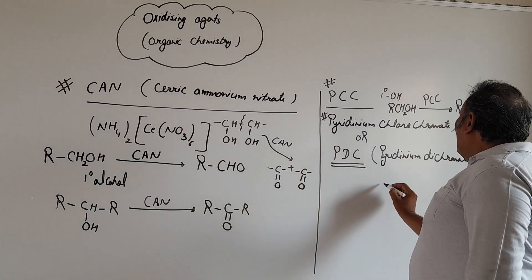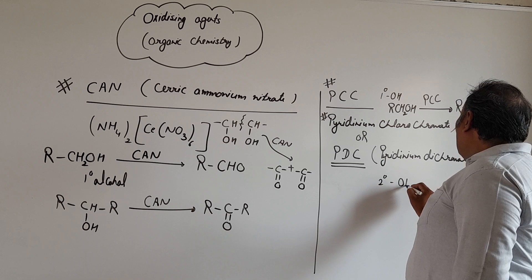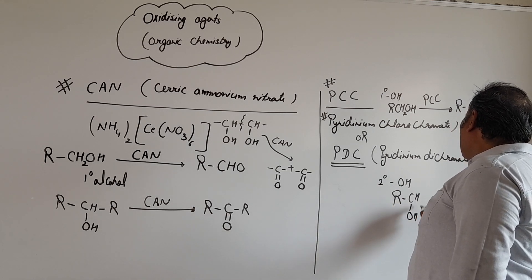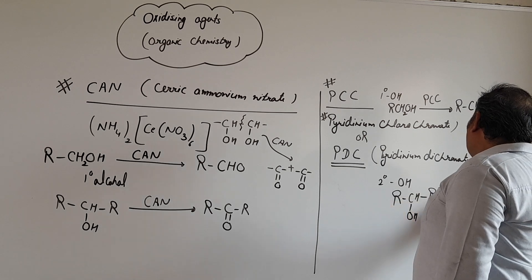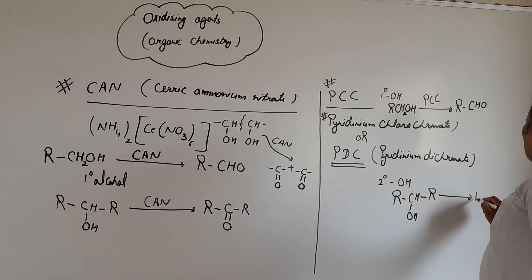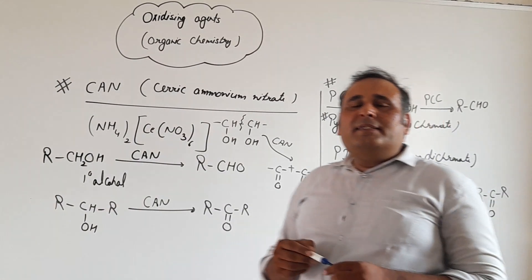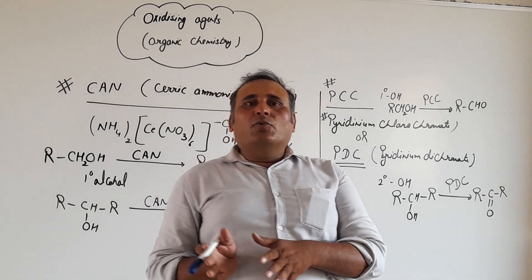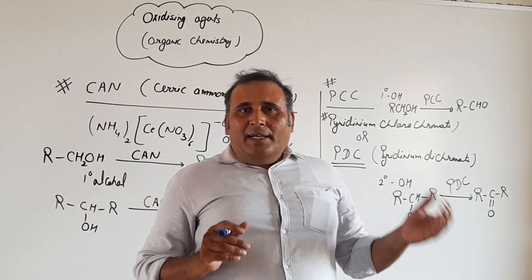If we are using 2 degree alcohol, then 2 degree alcohol gets converted into ketone by reacting with PCC or PDC.